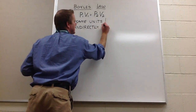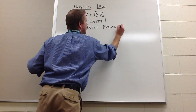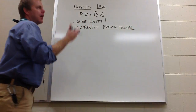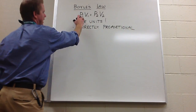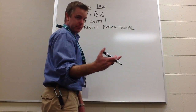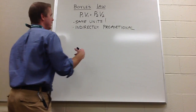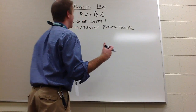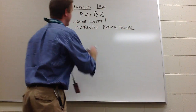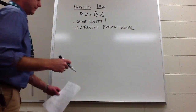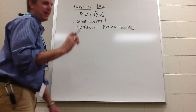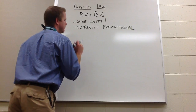What does indirectly proportional mean in everyday layman's terms? When one goes up, the other goes down. So if we take the pressure and double it, the volume is going to be cut in half — they're inverses of each other. Triple one, it's a third. Likewise, if we cut the pressure in half, the volume is going to double. So inversely proportional. And the units must match.